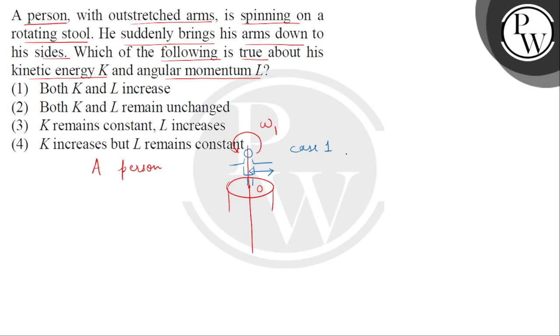So bachow, in this case we can see that no external torque acts on the system. Now here system means what? System means this person as well as the rotating stool on which he is standing, on which he is spinning. So bachow, when external torque is zero, then angular momentum will be conserved. Means we can apply the law of conservation of angular momentum.